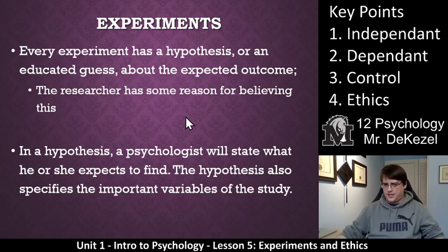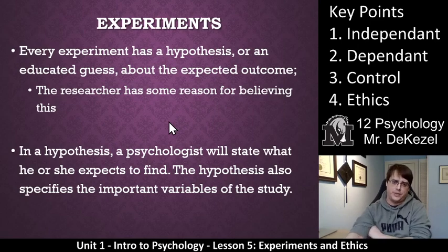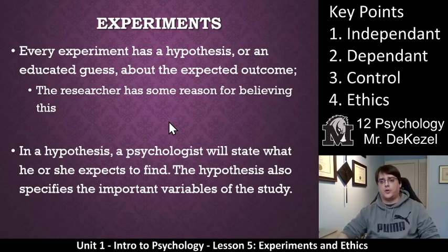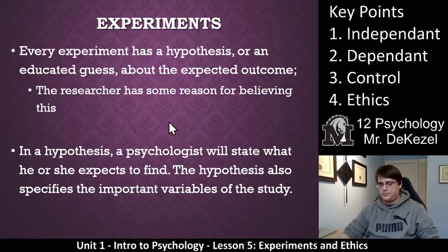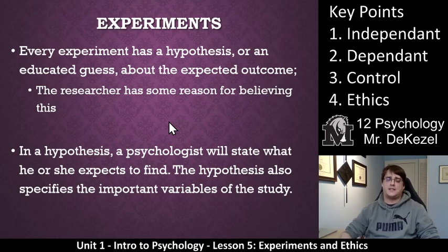Every experiment has a hypothesis, or an educated guess about what the researcher expects the outcome to be. When you come up with your idea for your experiment, you will come up with a hypothesis. For example: I think that the taller kids are going to be better at basketball. The researcher has some reason for believing this — taller people generally have an easier time putting it in the hoop. In a hypothesis, a psychologist will state what he or she expects to find, and the hypothesis also specifies the important variables of the study.